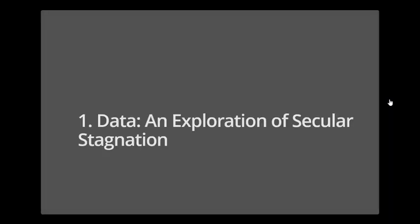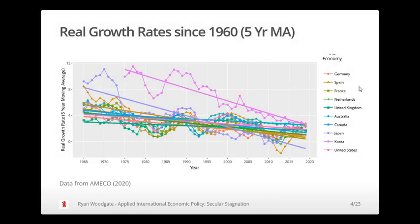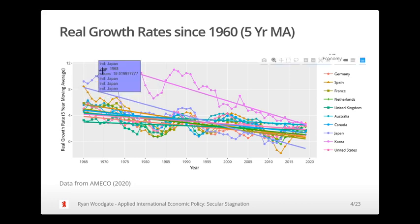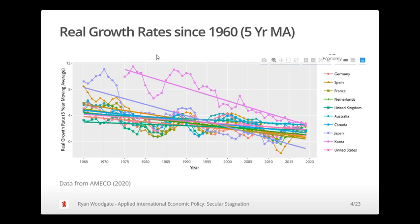Well, what is secular stagnation? There's no better way to understand it than to have a look at some data. Here we have data on the real growth rates in various major economies around the world since 1960, and each data point is an average of the five years that go before that year — a five-year moving average. This is just there to reduce some of the volatility in the data and make the trends more apparent.